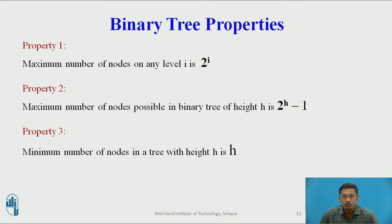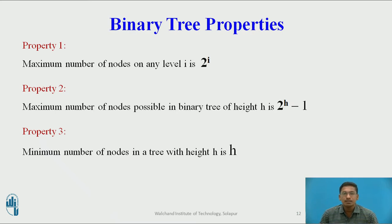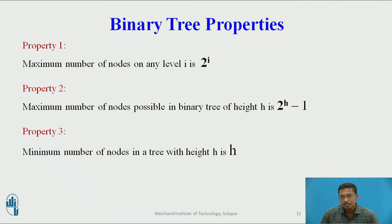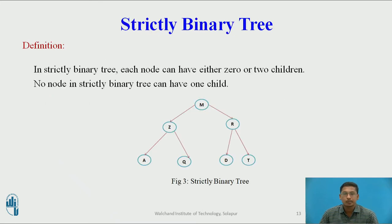The next property: the maximum number of nodes possible in a binary tree of height h is 2 raised to h minus 1. In the previous question, the maximum number of nodes in a binary tree with height 5 is 31, because 2 raised to 5 is 32 and 32 minus 1 is 31. The next property: the minimum number of nodes in a binary tree with height h is h, meaning only one node is present at every level.